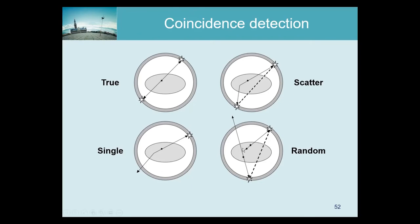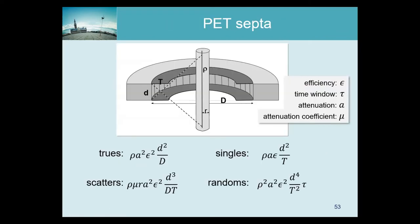A large number of singles causes dead time problems. Another problem is that if two singles arrive simultaneously, they are mistaken for a coincidence — a random event — producing a false coincidence line that may lie outside the patient. Randoms typically follow a very uniform spatial distribution. Some calculations show how PET system geometry affects the relative amounts of trues, scatters, singles, and randoms acquired.